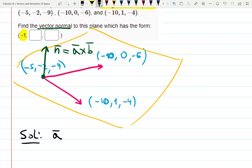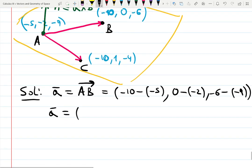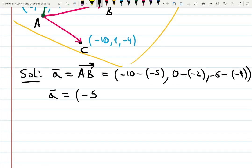Let's build a vector A, and I'm choosing this point, that's called capital B, capital A, capital C. I'm choosing it to be AB, like so. By the definition of the vector, we will subtract minus 10 and minus minus 5, 0 minus negative 2, and minus 6 minus negative 9. So A is going to be, minus 10 plus 5 is minus 5, then 0 plus 2 is just 2, and minus 6 plus 9 is 3. This is my A.